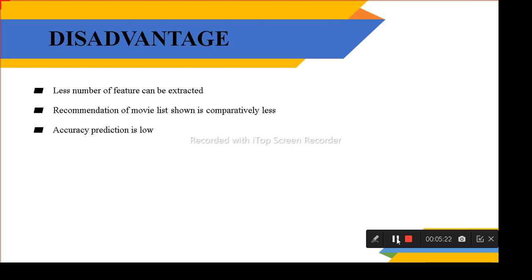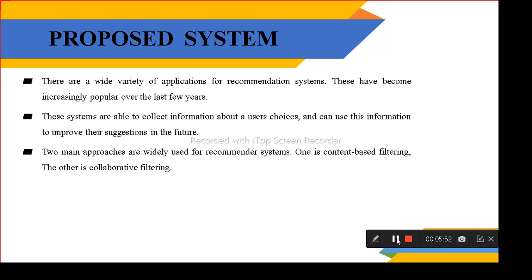The disadvantages are very significant because accuracy production is low. When the accuracy is low, the result will always be low. Less number of features can be extracted. And the recommendation movie list is comparatively less, because it cannot analyze the word that the user provides. In the proposed system, we are using a content-based filter and collaborative filter, which gives widely used recommendations.